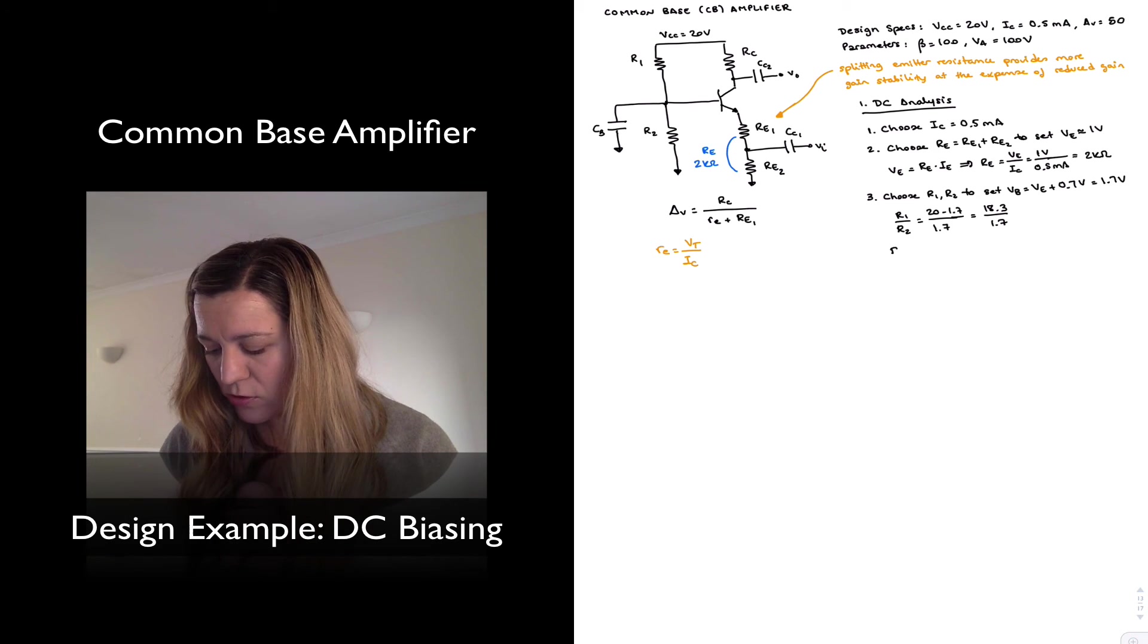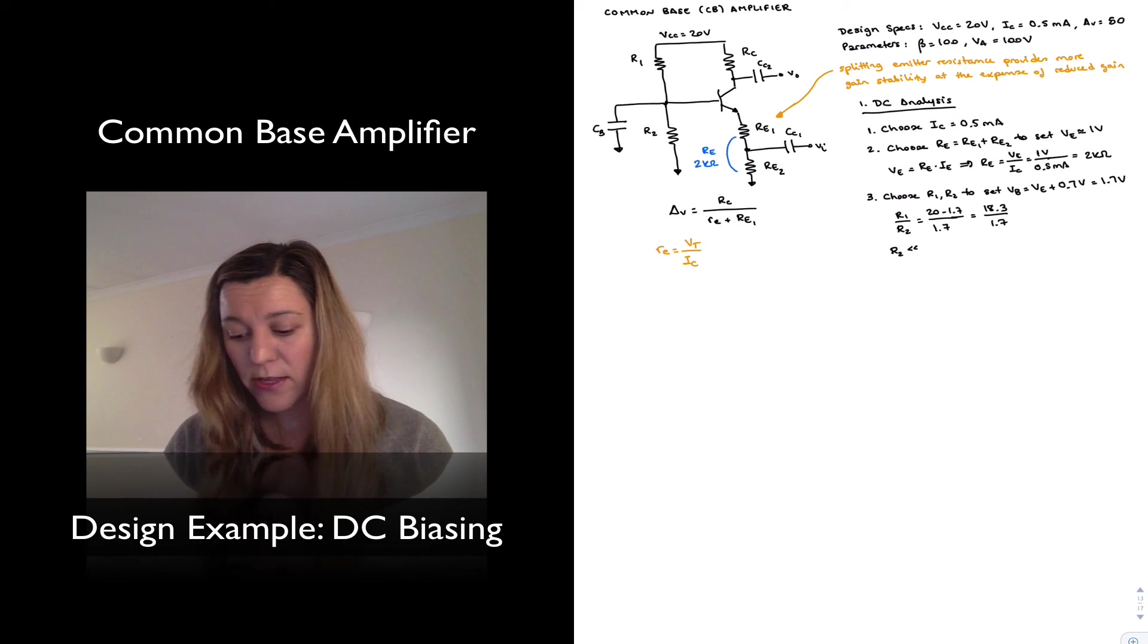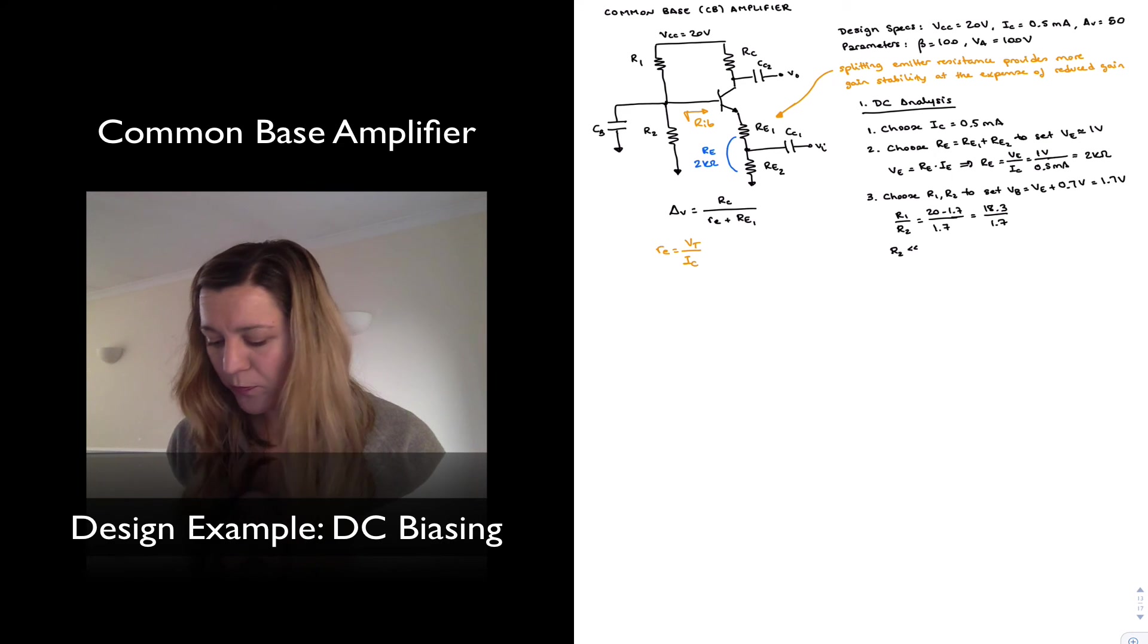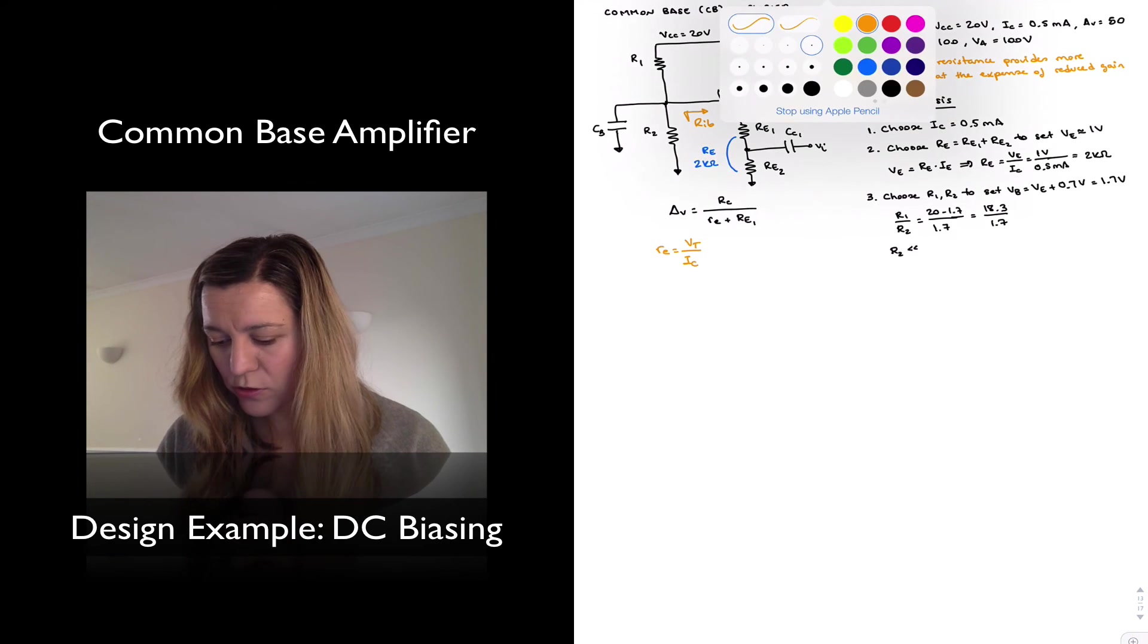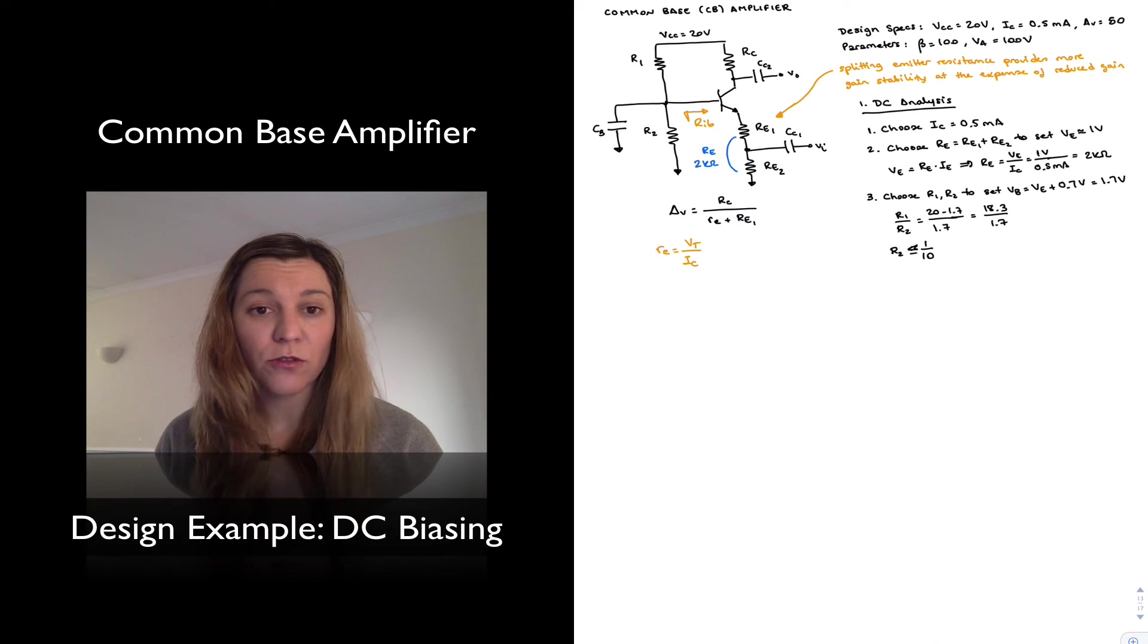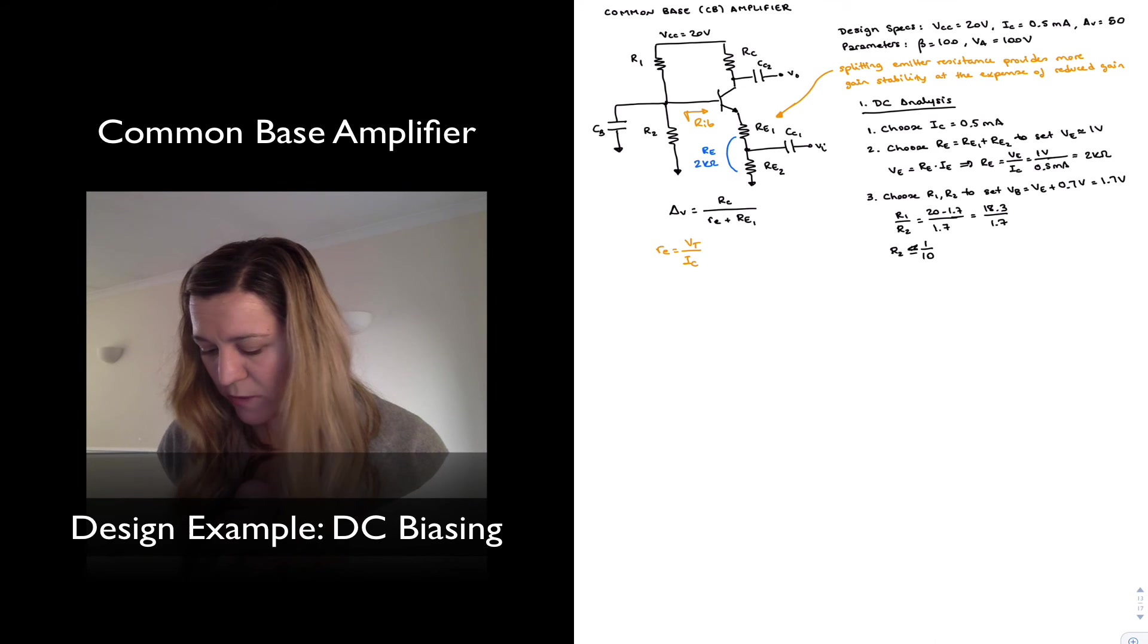But I also want my R2 to be much smaller than the resistance looking into my base. Since I am making the approximation that this is a perfect voltage divider, that implies that R2 is much smaller than the resistance looking into the base of the transistor, and therefore most of the current flows through R2. So I want R2 to be less than or equal to one order of magnitude, or one tenth of beta times...